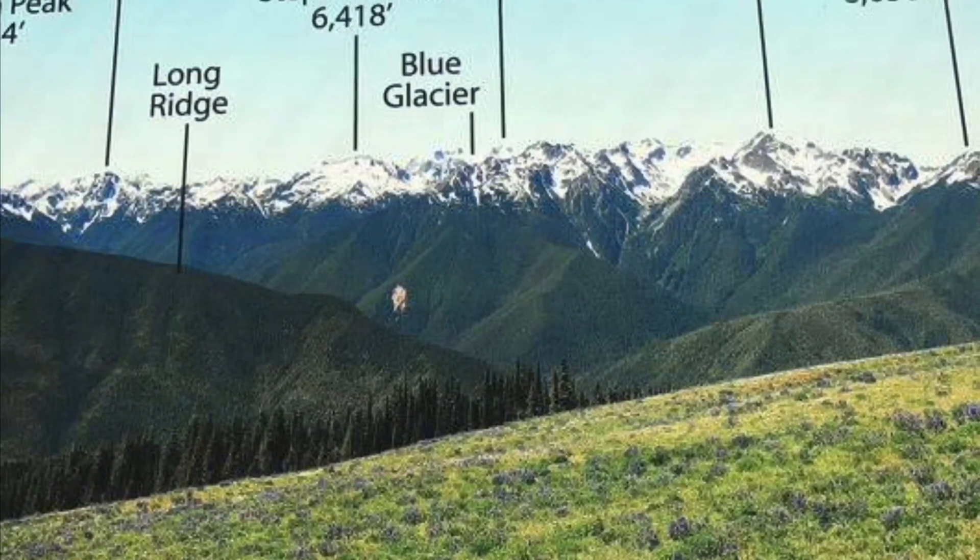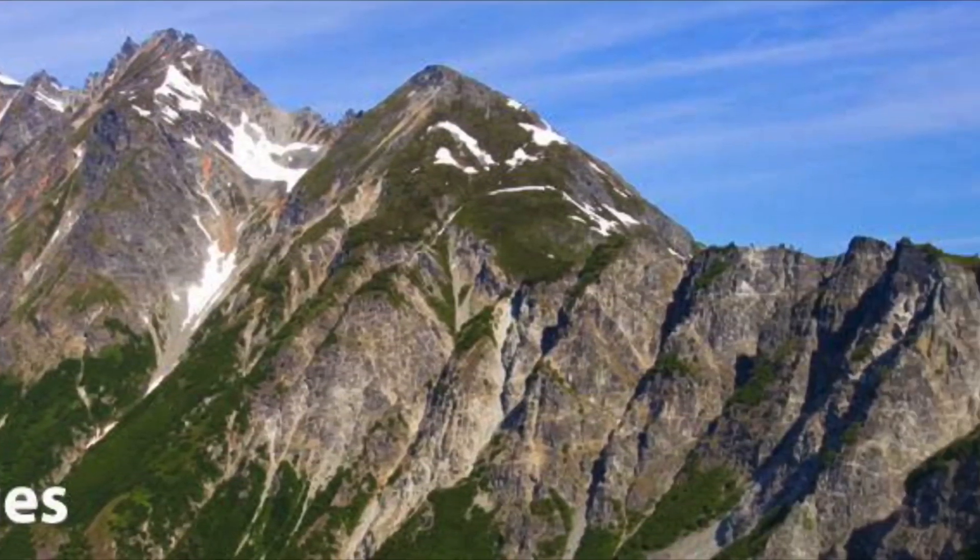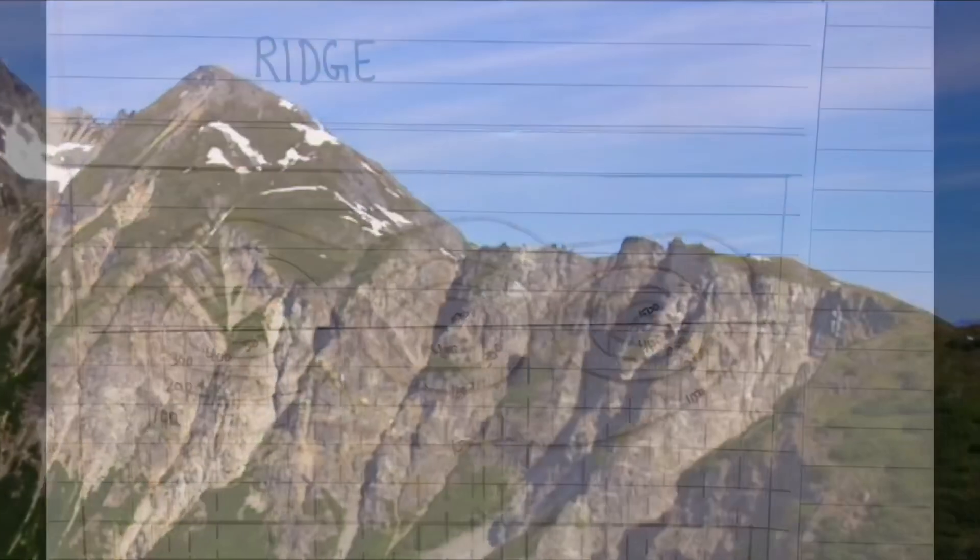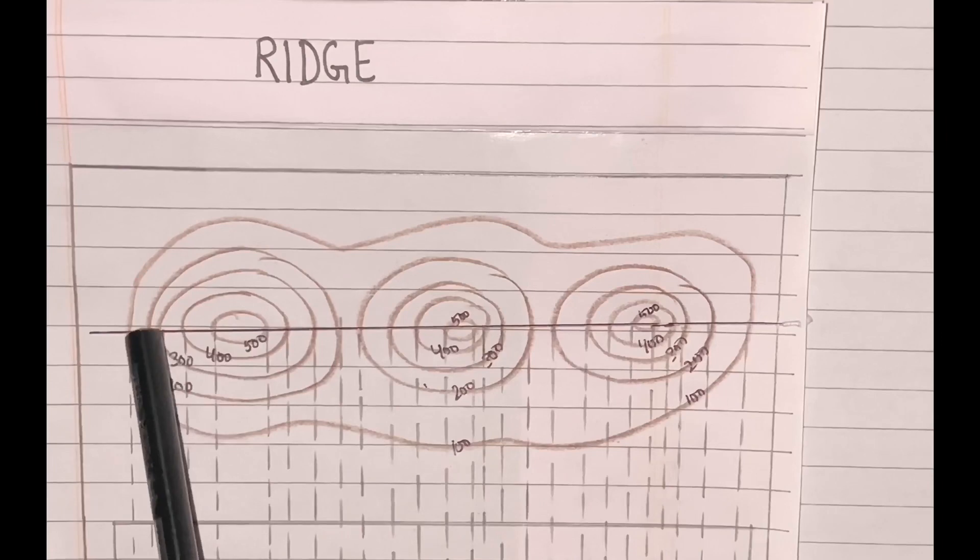Now the question is, what type of contour design depicts a ridge in a topographical map? In topographical maps, this type of contours are drawn to show a ridge.